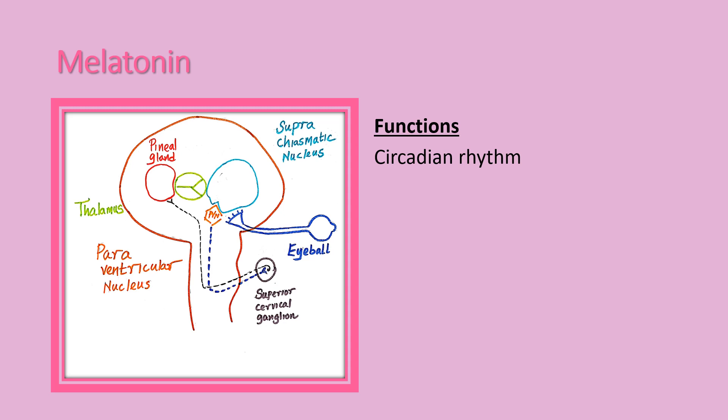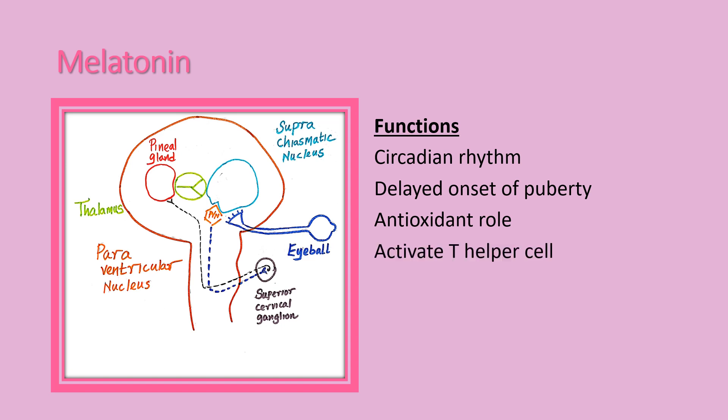Melatonin delays the onset of puberty — it inhibits the release of gonadotropin. Because of its antioxidant role, it prevents the accumulation of free radicals. Melatonin also plays an important role in immunity by activating the T-helper cell.